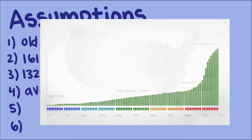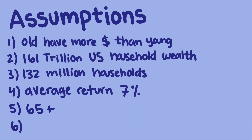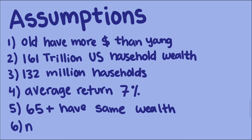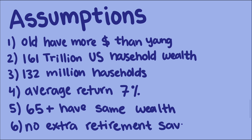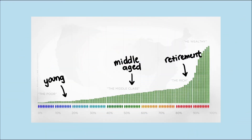One way to define a fair wealth distribution is that each household has enough wealth that it would grow to the same amount by the time the head of house reaches 65, and every household older than that maintains their wealth as they live off the interest. So a very young household might not have much now, since they have a long time for it to grow. We will also start with the assumption that each household doesn't save any more towards retirement.